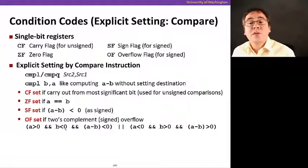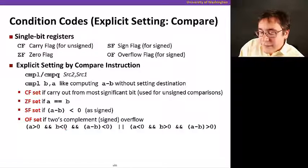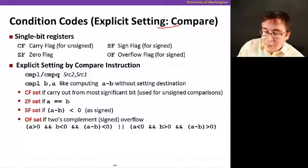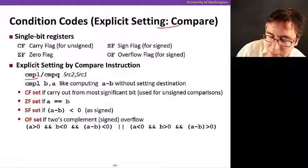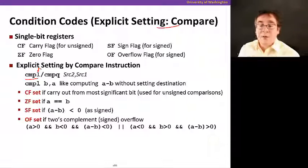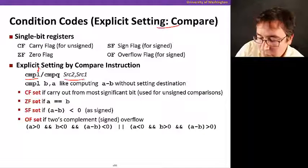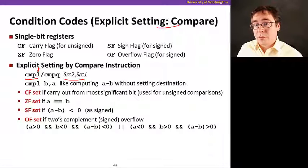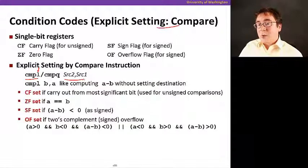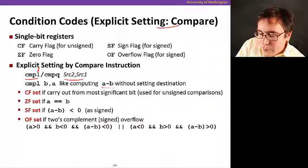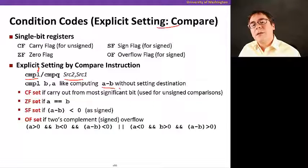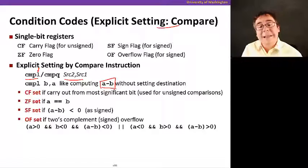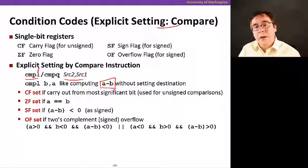The other way is to set the condition codes explicitly using compare instructions. For example, if you do cmpl, which compares a four-byte number, you pass two operands as a parameter, source 2 and source 1. What it does, essentially, is effectively compute a minus b but without setting the destination. It just computes this expression so that it can set the condition codes appropriately.